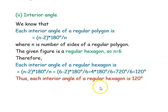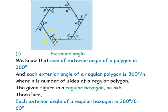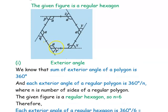So each exterior angle is 60 degrees and each interior angle is 120 degrees. If you add the interior angle and exterior angle you get 180 degrees — that is a straight angle. Looking at the figure, each interior angle plus exterior angle forms a straight angle of 180 degrees. Since 120 + 60 = 180 degrees, we can confirm that our answer is correct.